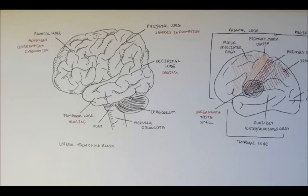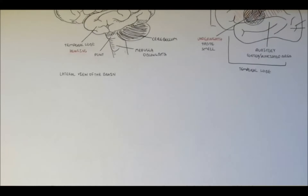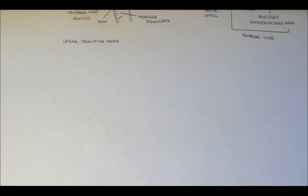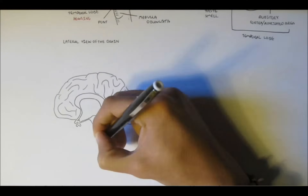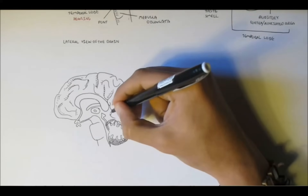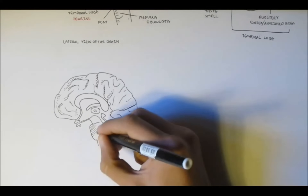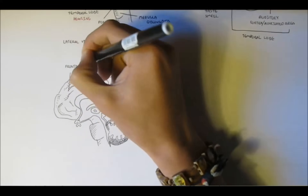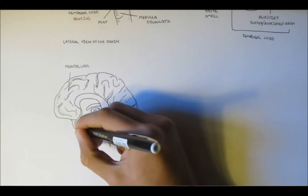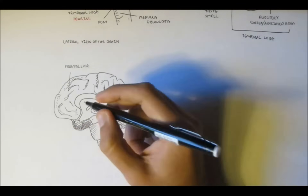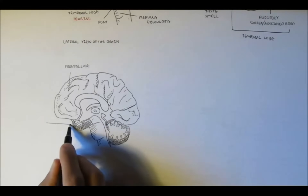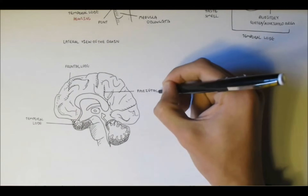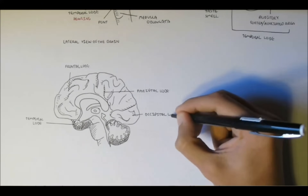If we cut this lateral view of the brain in half and see what's underneath — the medial section — this is what it would look like. Going over the lobes: we have the frontal lobe here, and around here is the right temporal lobe, because we just removed the left temporal lobe. Behind the frontal lobe is the parietal lobe, and at the very back of our brain is the occipital lobe.